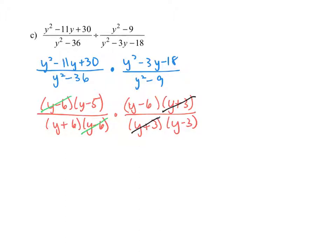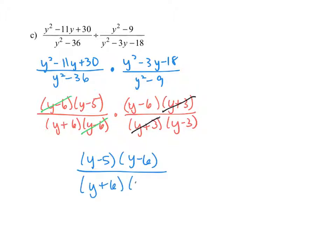We can write our final answer as a single fraction. In the numerator we have factors y minus 5 and y minus 6, and in the denominator we have factors y plus 6 and y minus 3. We can leave our answer in that form — there are no other common factors to divide out.